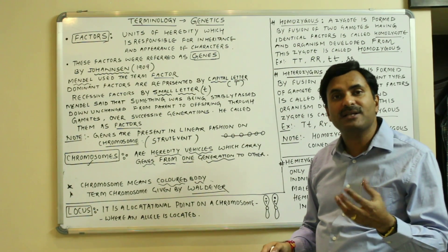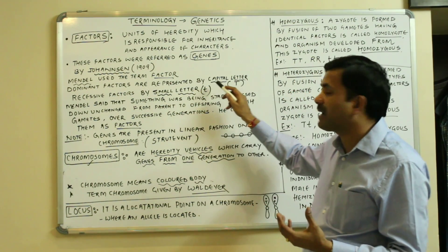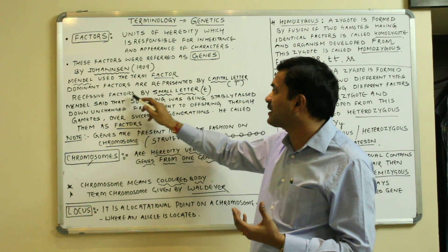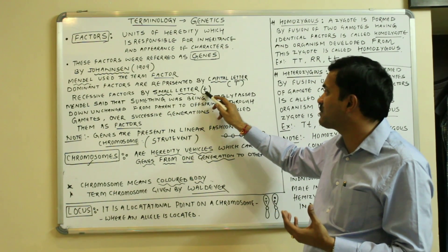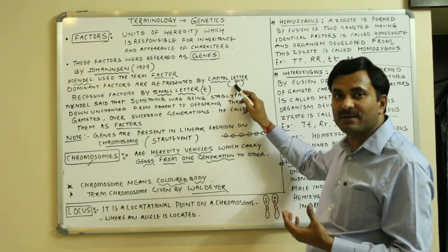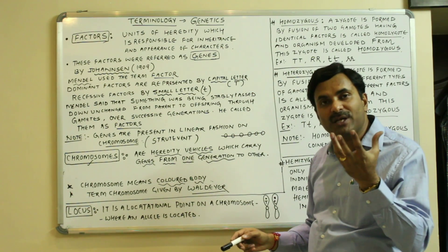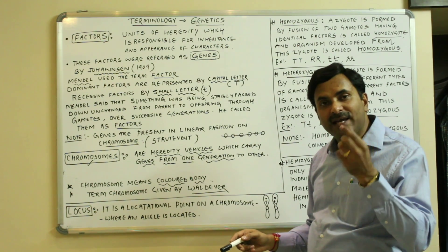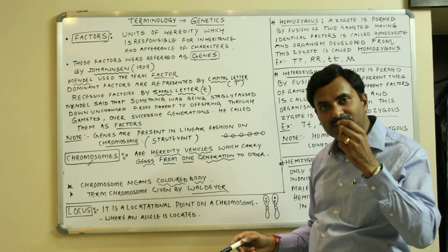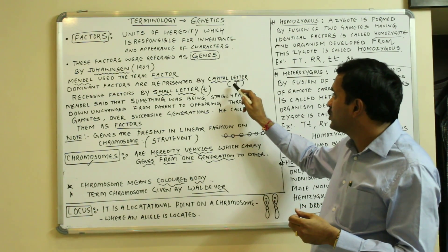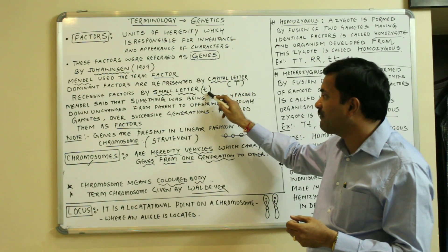There are two types of factors: one is known as a dominant factor and another is known as the recessive factor. The dominant factor is represented by a capital letter and the recessive factor is represented by a small letter. For example, if we are talking about plant height, the allele consists of tall and dwarf genes.